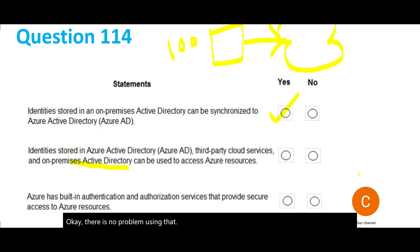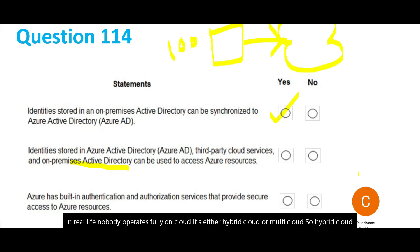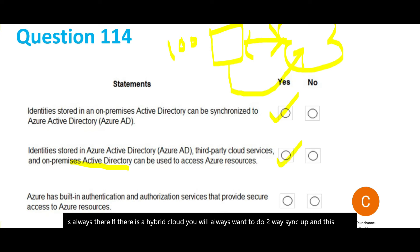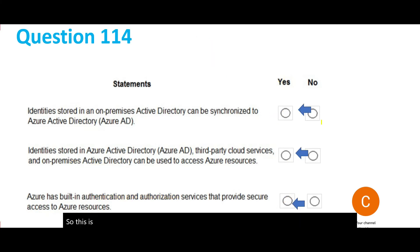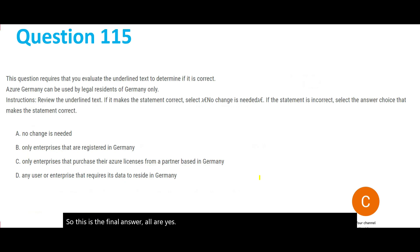In real life, nobody operates fully on cloud — it's either hybrid cloud or multi-cloud. With a hybrid cloud, you always want a two-way sync, and those identities can access services on Azure and vice versa. Statement 3: Azure has built-in authentication and authorization services that provide secure access to Azure resources. Active Directory itself provides authentication services — that is the purpose of Active Directory. So the final answer is: all three statements are Yes.